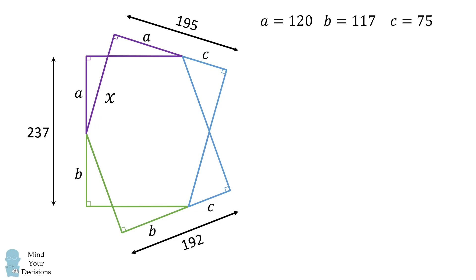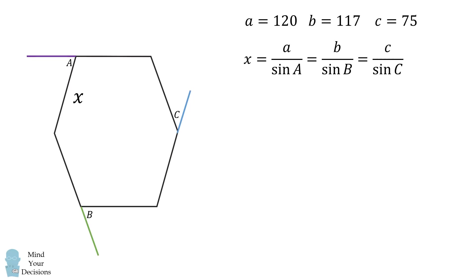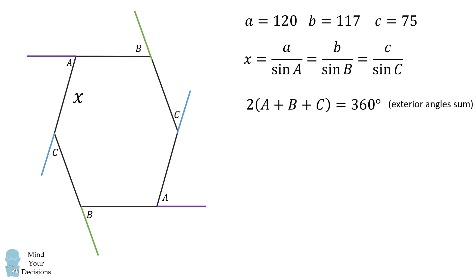Now, let's consider x as the side length of the hexagon and mark the angles as a, b, and c. In the purple right triangle, x equals a divided by the sine of angle a. In the green right triangle, x equals b over the sine of angle b. In the blue right triangle, x equals c divided by the sine of angle c. Notice that angles a, b, and c are exterior angles to the hexagon. Because opposite sides are parallel, each exterior angle appears twice. Therefore, 2 times (a + b + c) equals 360 degrees, so a plus b plus c equals 180 degrees.